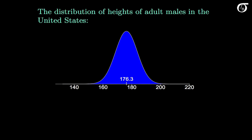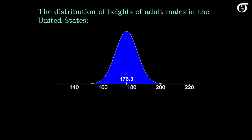The NBA legend Shaquille O'Neal is about 216 centimeters tall, with a corresponding z-score of approximately 5.2 — so Shaq's height is about 5.2 standard deviations above the mean for adult American males. That is very, very tall relative to other adult American males. The actor Tom Cruise has a height of about 170 centimeters, with a corresponding z-score of approximately minus 0.8, so his height is about 0.8 standard deviations less than the mean height of adult American males.